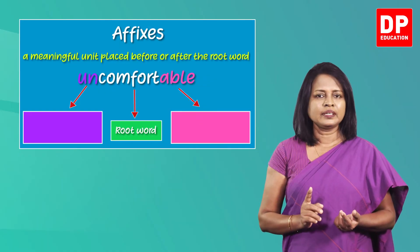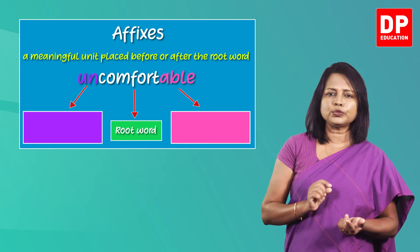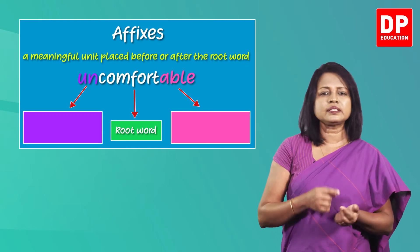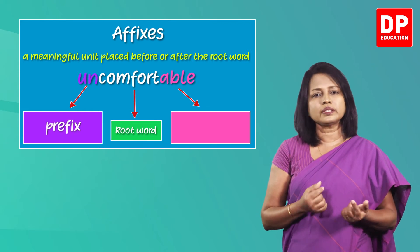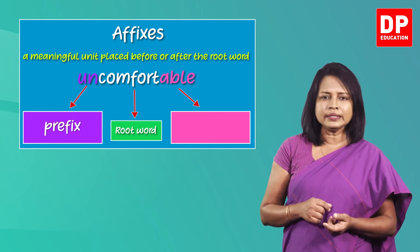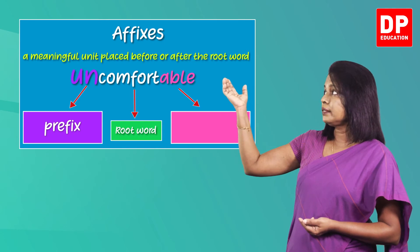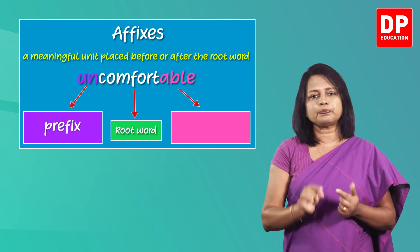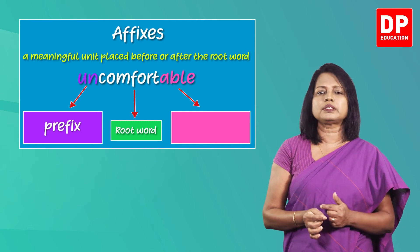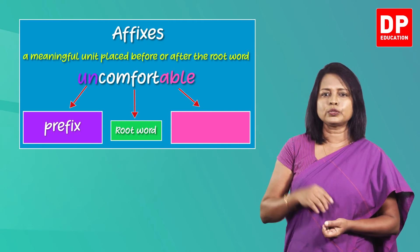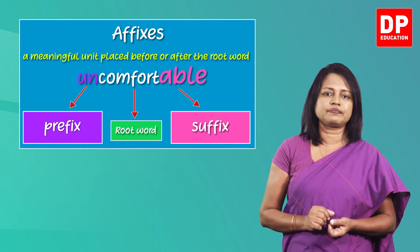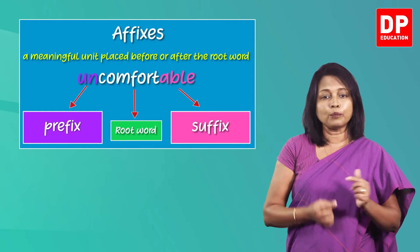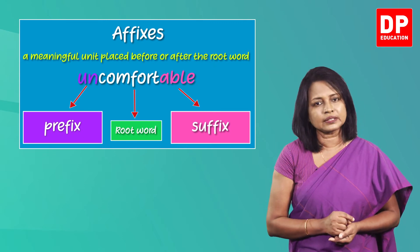The two affixes added to this root word have different names. The affix added before the root word is called a prefix. So in this example, 'un' is a prefix. In the same way, the affix placed after the root word is called a suffix. So here 'able' is a suffix. As the definition states, both prefixes and suffixes have meanings.